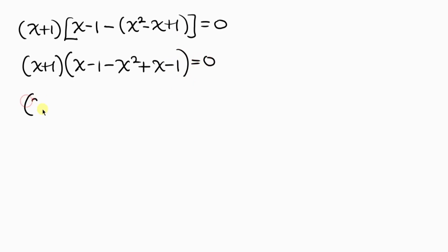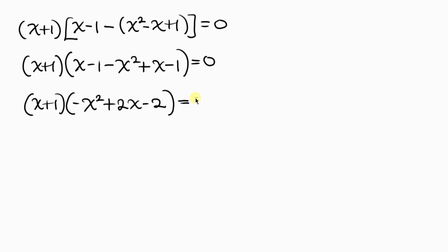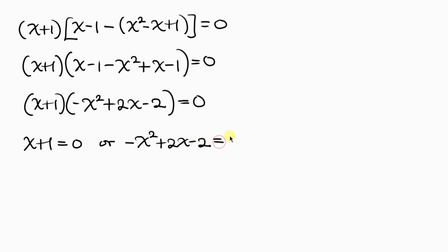Simplifying further, we have (x plus 1) times: negative x squared, then x plus x is 2x, and negative 1 minus 1 is negative 2. So we have (x plus 1) times (negative x squared plus 2x minus 2) equals 0. We now have two cases: x plus 1 equals 0, or negative x squared plus 2x minus 2 equals 0.